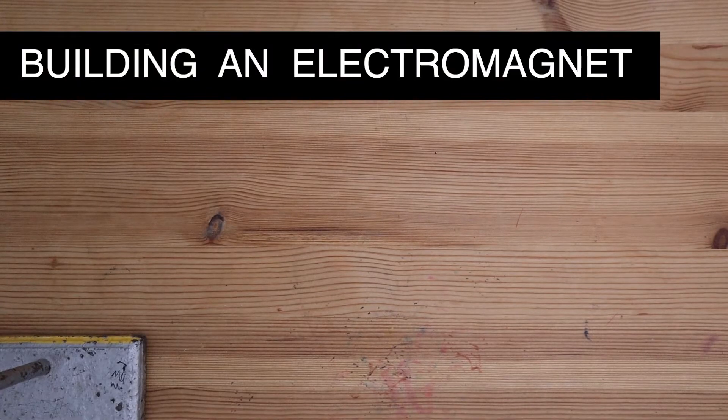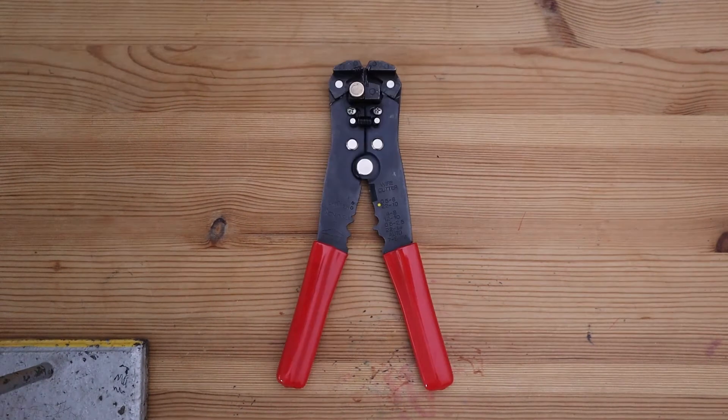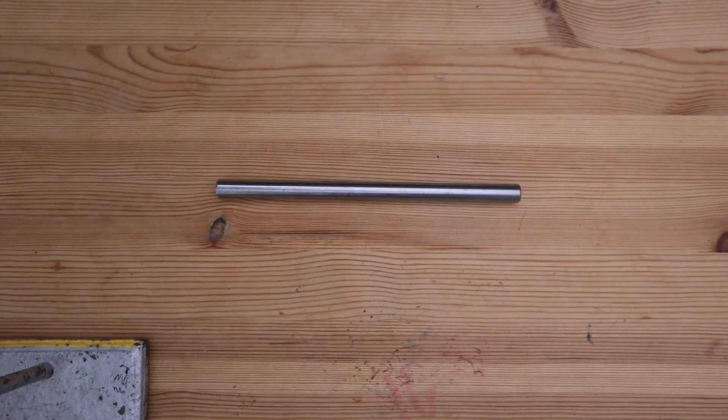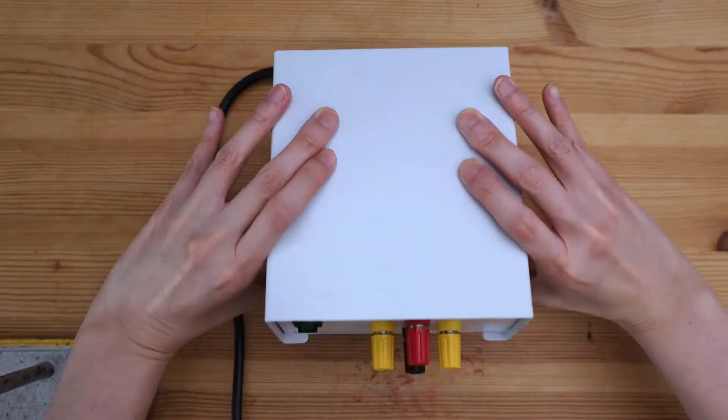To build your own electromagnet, you need a wire cutter, a wire stripper, insulated wire, an iron core, some leads with crocodile clips, and a power supply.